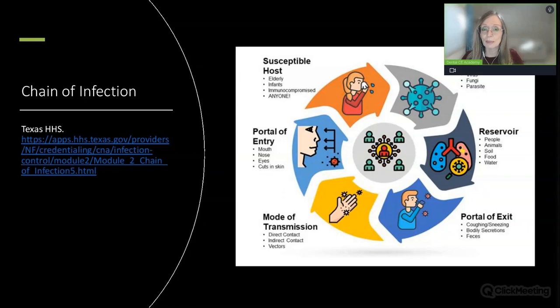Pathogens include bacteria, viruses, fungi, and parasites. We need a reservoir, which can be human, animals, soil, food, or water. We need a portal of exit—a way for the pathogen to escape its host—and a mode of transmission. Portal of exit can be coughing, sneezing, bodily secretions, or feces. Notice that hands are the number one mode of transmission.